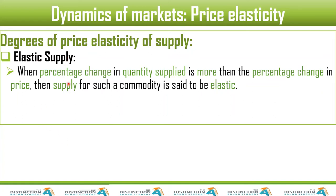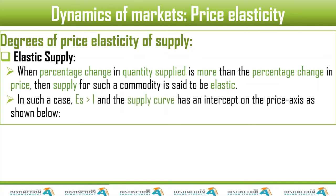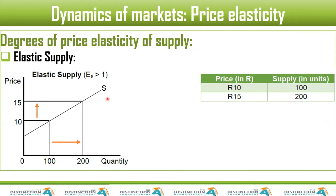The next one is elastic supply, which in some cases we will refer to as relatively elastic supply. When a percentage change in quantity supplied is more than the percentage change in the price — like we saw with the answer we got, which was two — if it's greater than one, then it's relatively elastic.